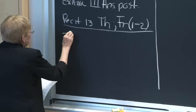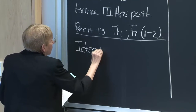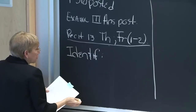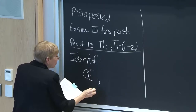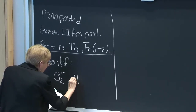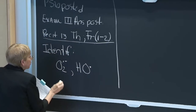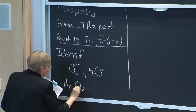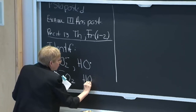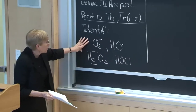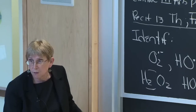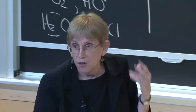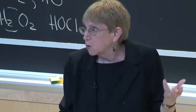For identification, we have superoxide, hydroxide radical, hydrogen peroxide, and hypochlorous acid. We're going to look at the reactivity of these species. Superoxide and hydroxide radical are one-electron oxidants. Hydrogen peroxide and hypochlorous acid are two-electron oxidants. So reactive species don't need to be radicals — they can do two-electron chemistry or one-electron chemistry.